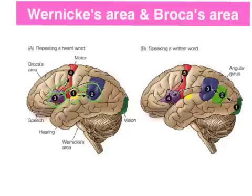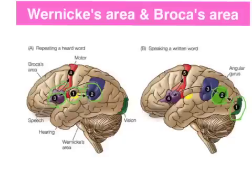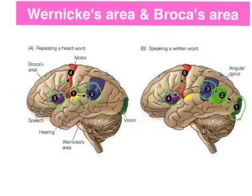A different process occurs when we're speaking a written word. The process starts in the visual cortex, which processes the text in the occipital lobe. Then we move to the angular gyrus, which is a specialised area of the brain that processes text and creates an auditory code. Moving through to Wernicke's area, which formulates the plan of what we're going to speak, and a message is sent to Broca's area, which produces the speech via the vocal apparatus in the motor cortex.